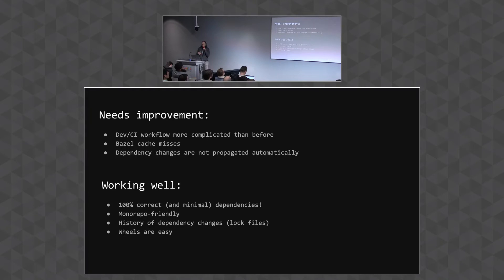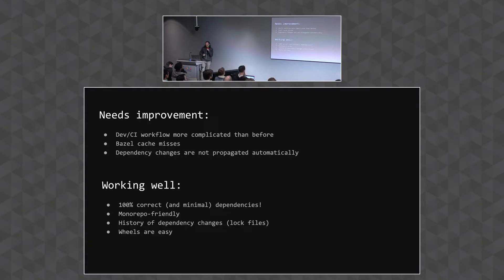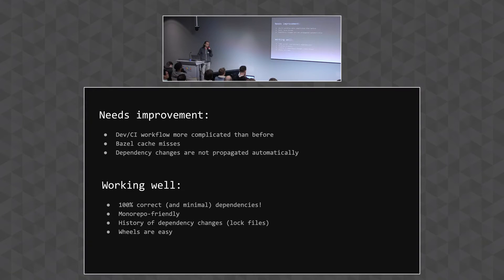On the plus side, we did achieve our most important goal: to reliably know the precise set of third-party dependencies that every Python application has — the set that contains everything the application needs and nothing that it doesn't. Our solution is monorepo-friendly. It has the nice side benefit that we can track dependency changes over time, because our lock files are checked into Git and we have their histories. And last but not least, we can easily produce wheels for our Python applications, which has made deployments a real breeze.